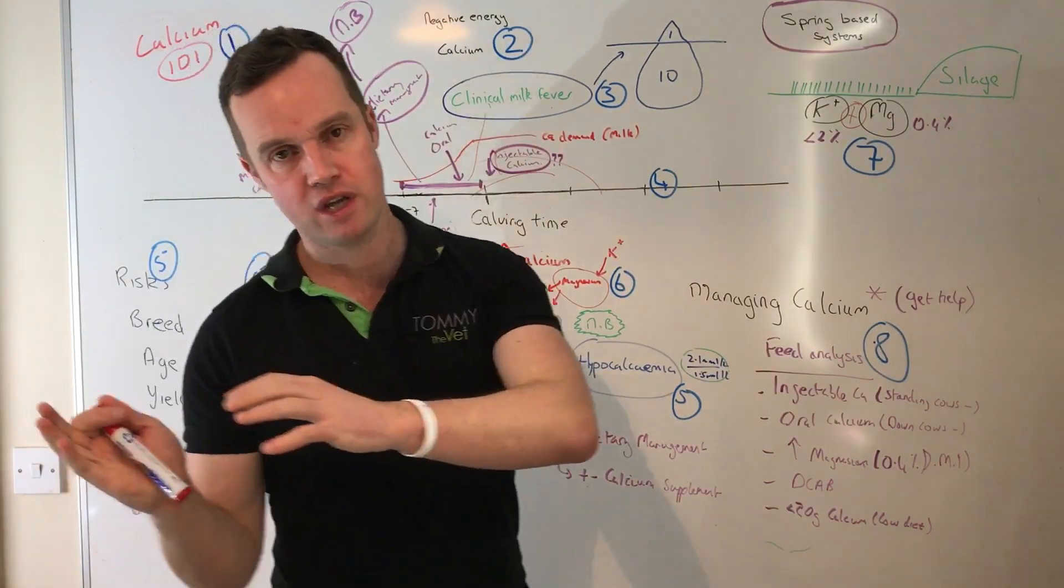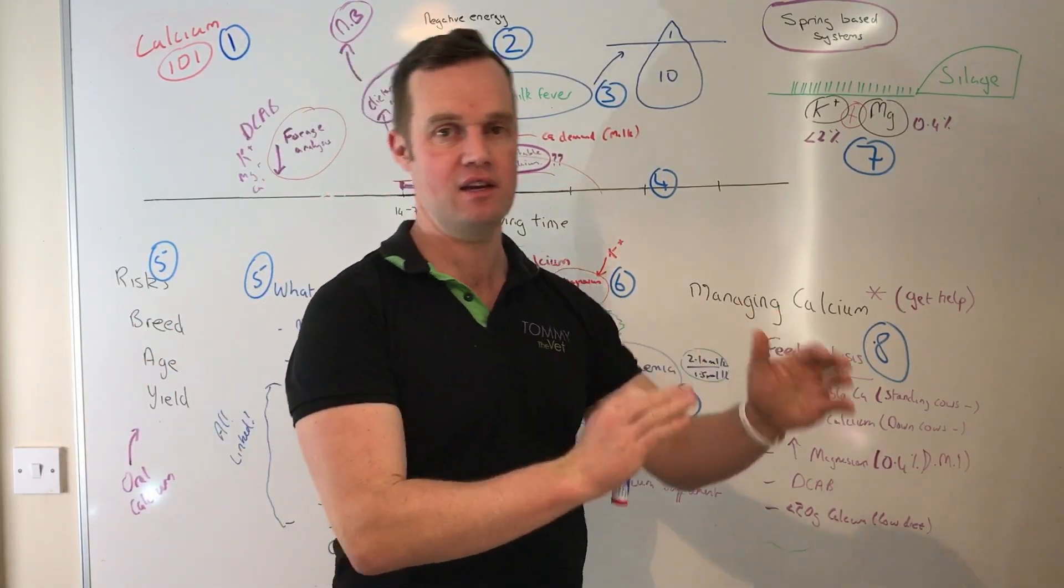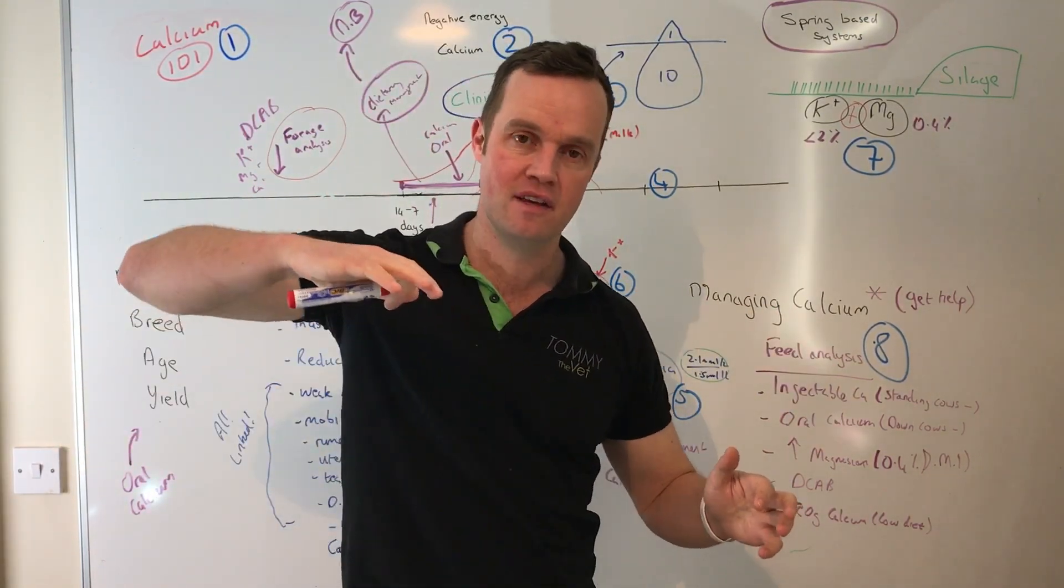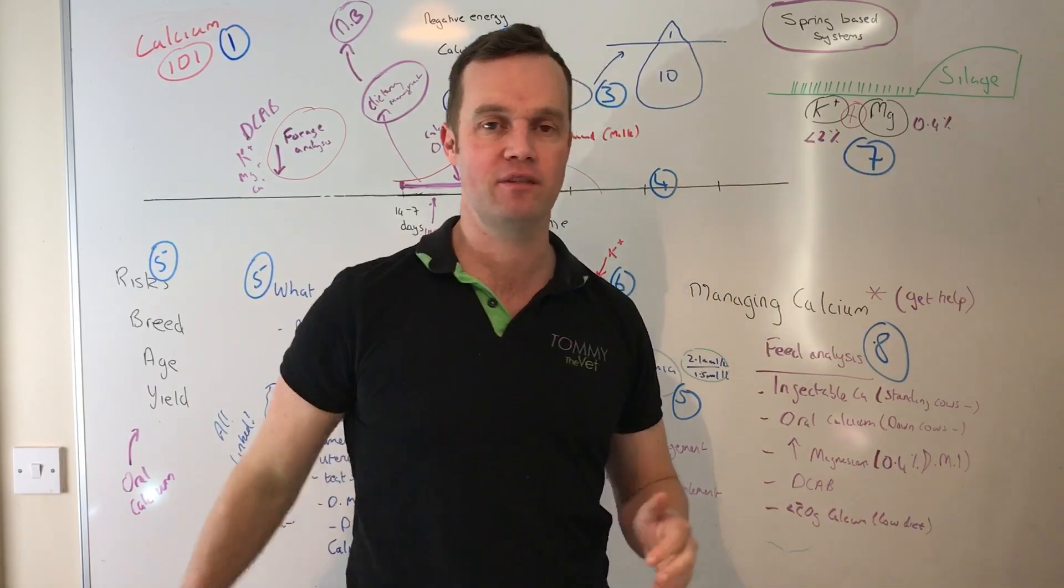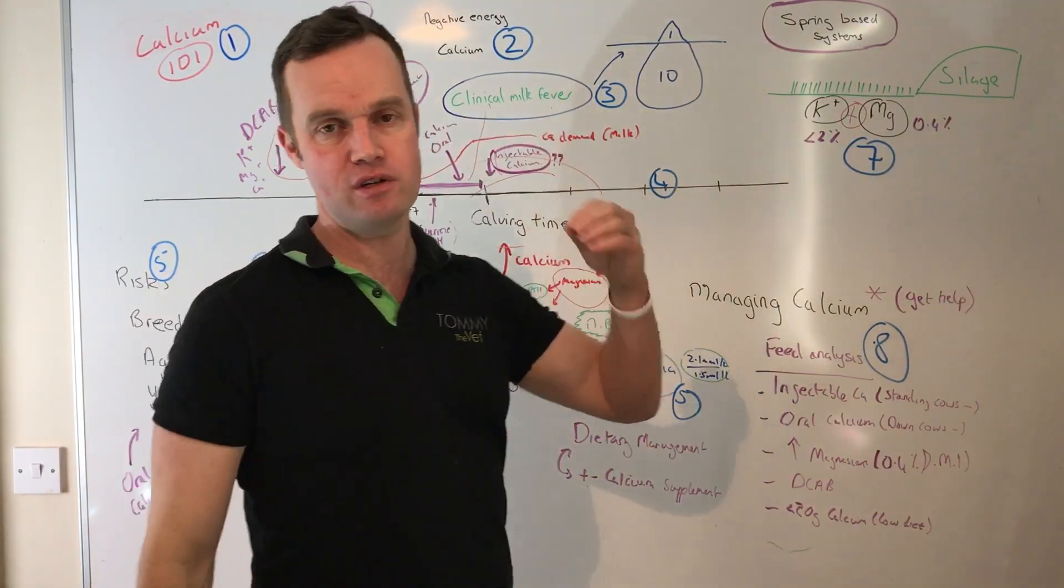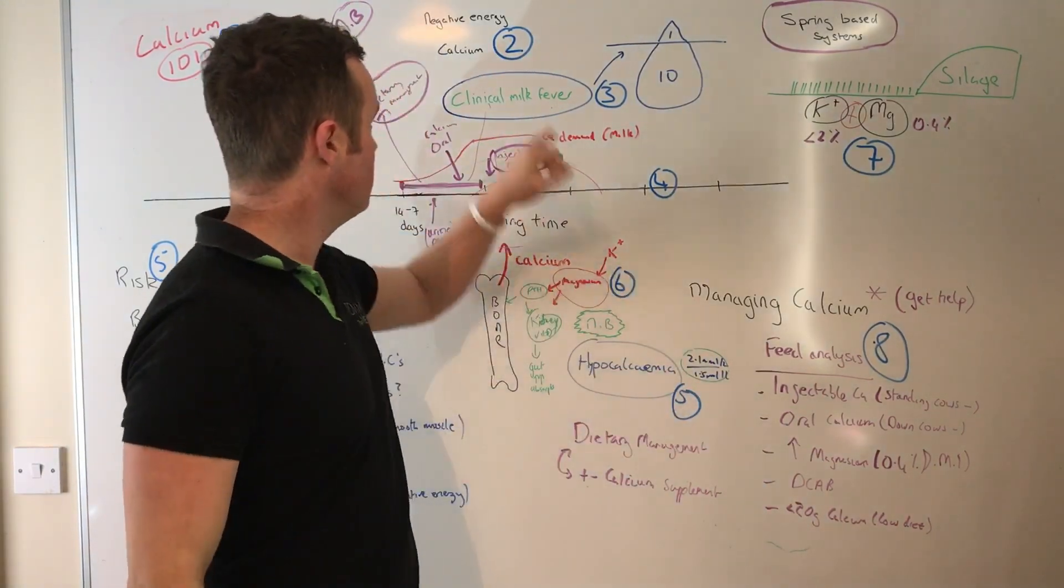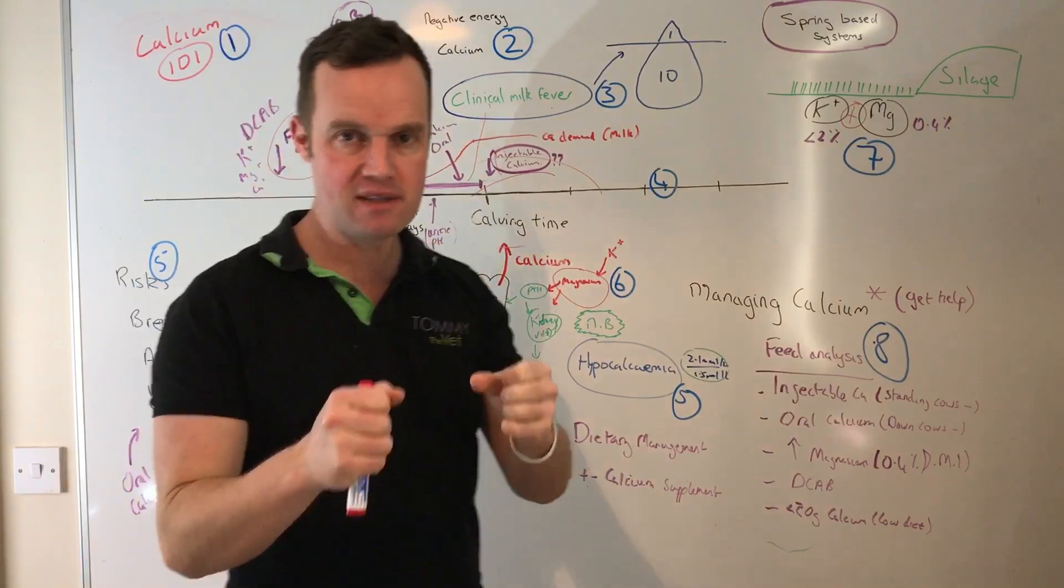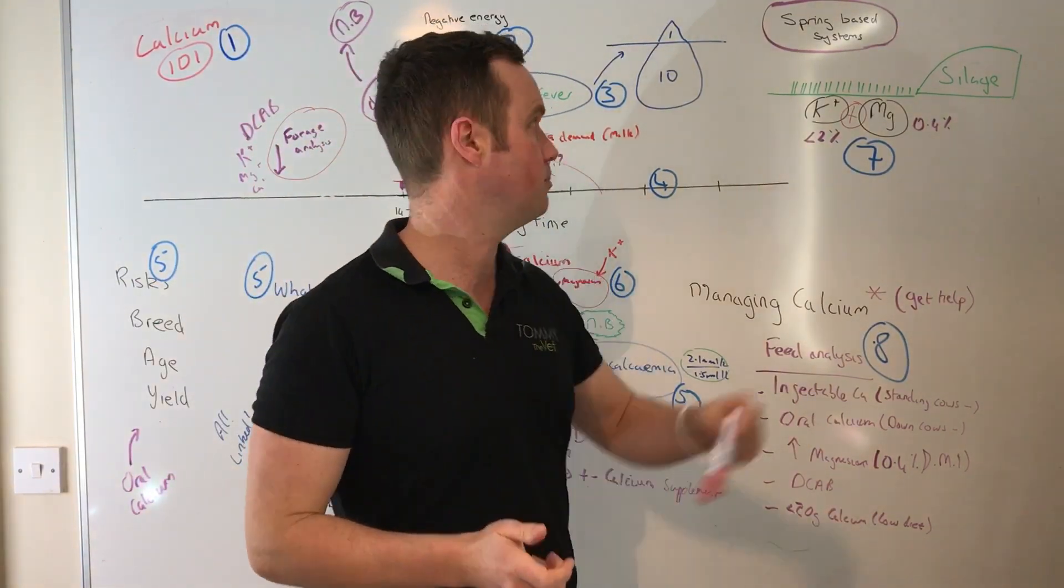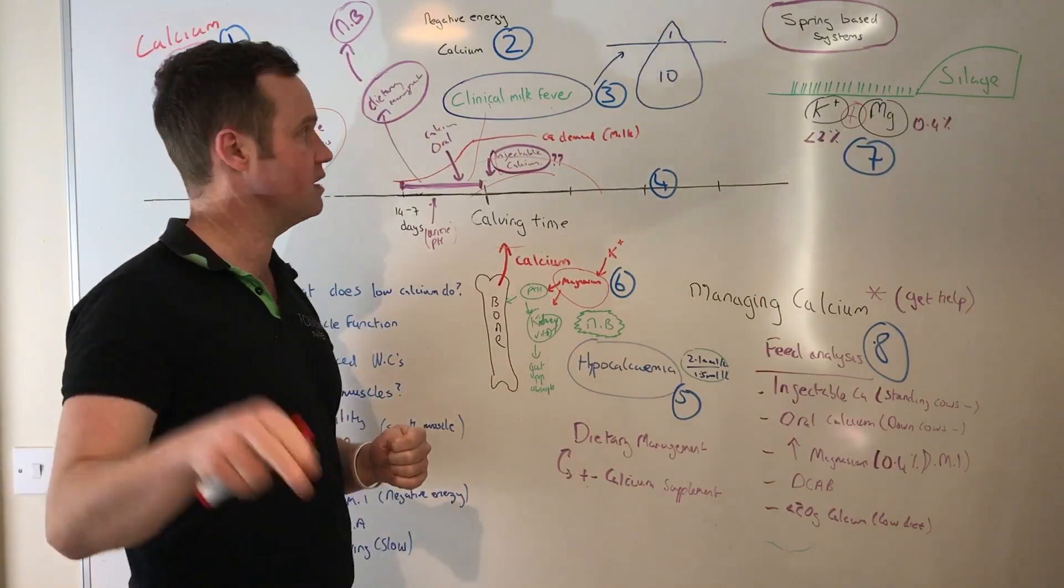Anyway, you came here to listen about calcium, a really important mineral in our spring calving systems, really important mineral for dairy cows regardless of whether spring or autumn or all year round. If you look at the cow when she calves, she has a massive transition from no milk production to lactation cycle, standing start, like these couch to 5Ks but in a window of 24 hours.